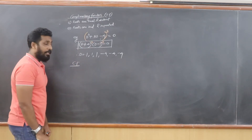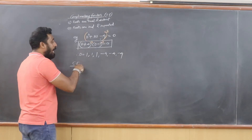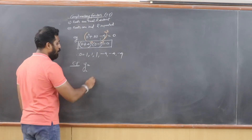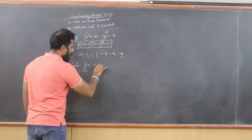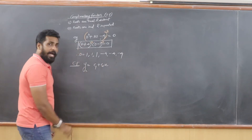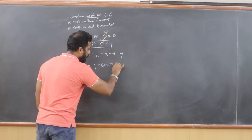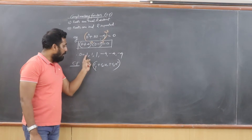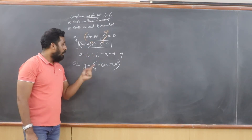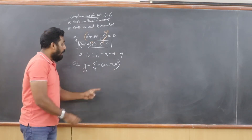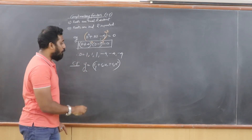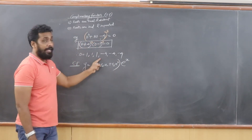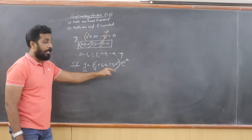Now let us write the complementary function. Root d = 1 repeats 3 times. The root goes into the power of the exponential term, so I write e raised to x. Since it is repeating 3 times, I write: yc = (c1 + c2·x + c3·x²)eˣ ...